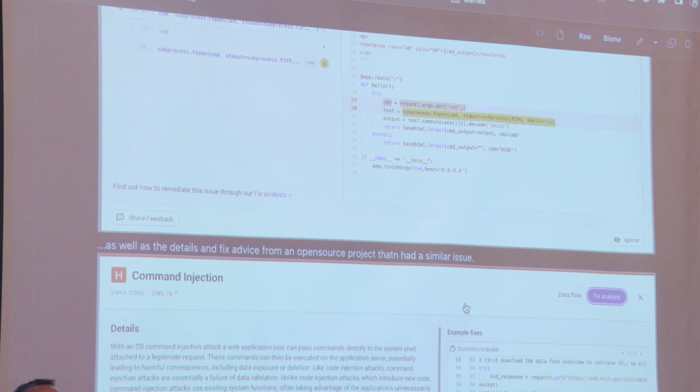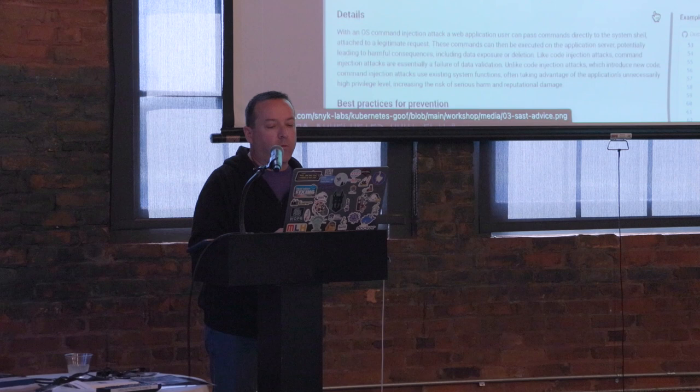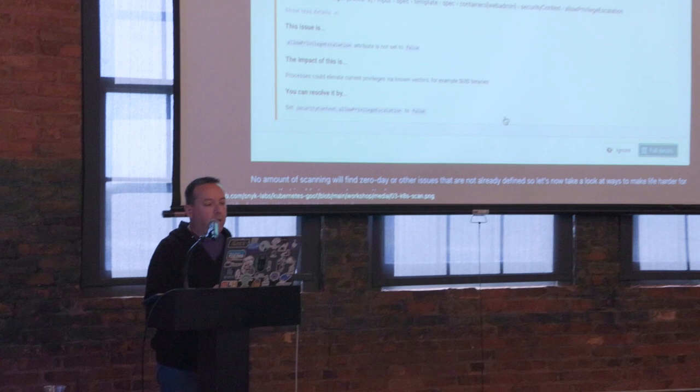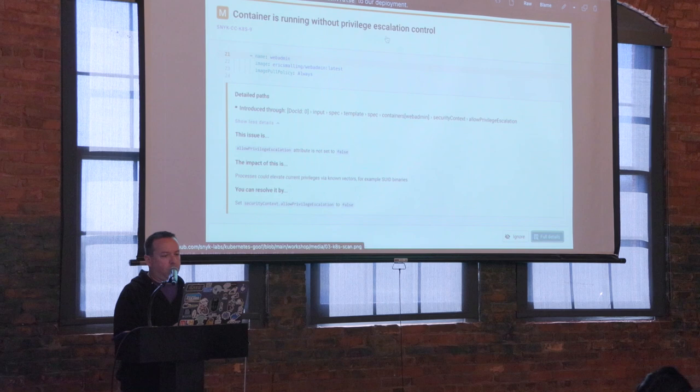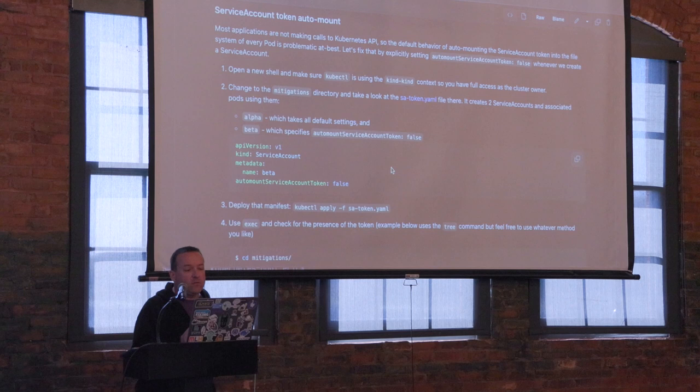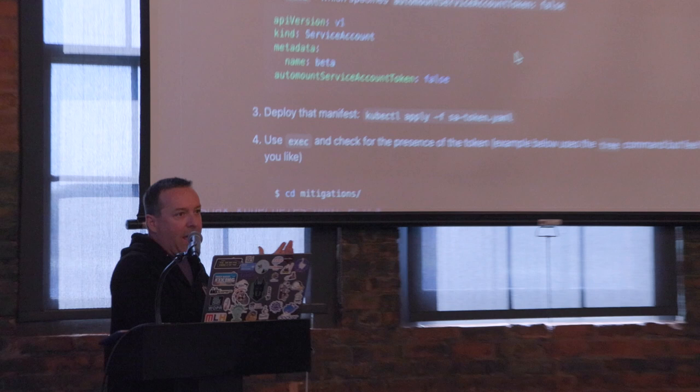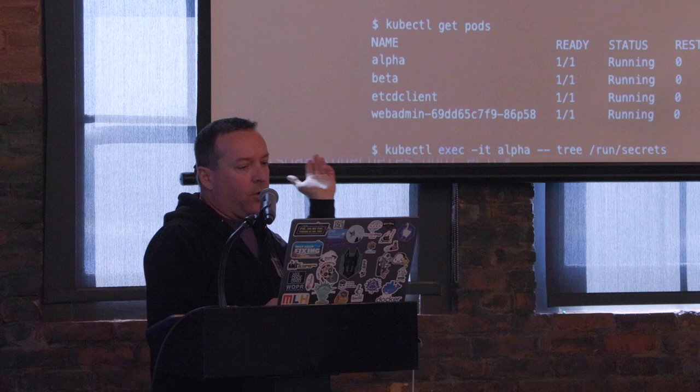You should also be watching your IaC files. For instance, our scanner running against the Kubernetes YAML for the contrived web app is telling you: 'hey, you're not setting `allowPrivilegeEscalation` to false.' Catch these things before they even get deployed. Next: turn off service account token automount. That's another thing that would have stopped me in my tracks on this exploit. It's very simple — just turn it on and deploy your service accounts that way.